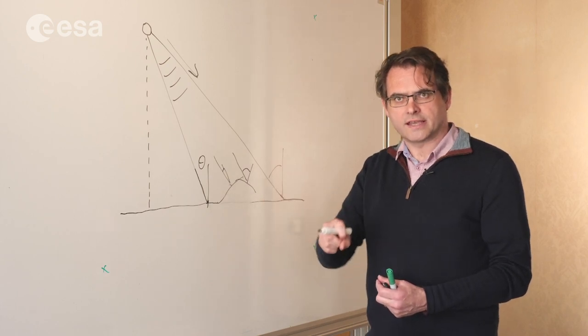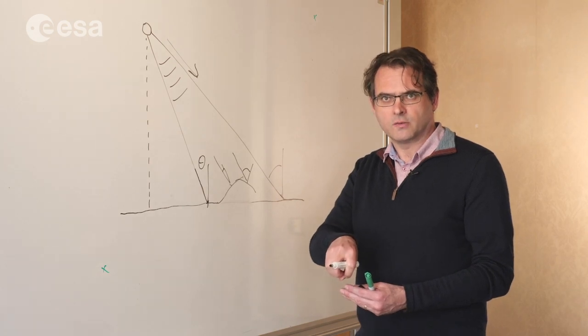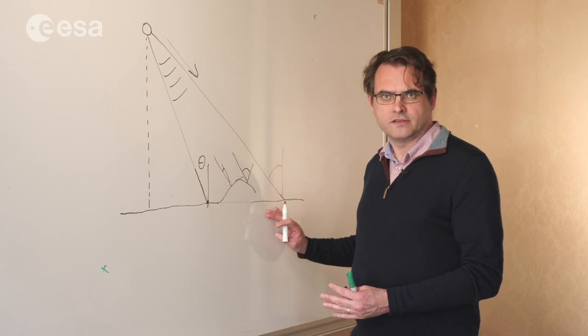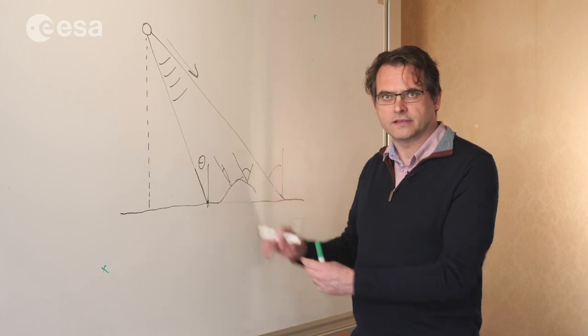And so because the incidence angle has a big impact on how you interpret the way that the microwaves are interacting with the ground surface, you have to consider not just where it is in the swath, but also the local topography, because that will impact on the local incidence angle.